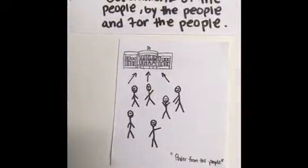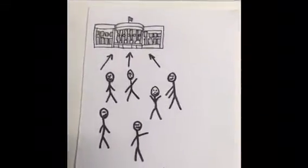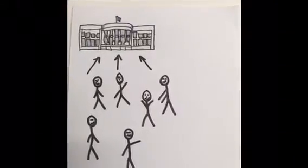Popular sovereignty. Government of the people, by the people, and for the people. The concept that government gets its authority from the people and that ultimate political power remains with the people.